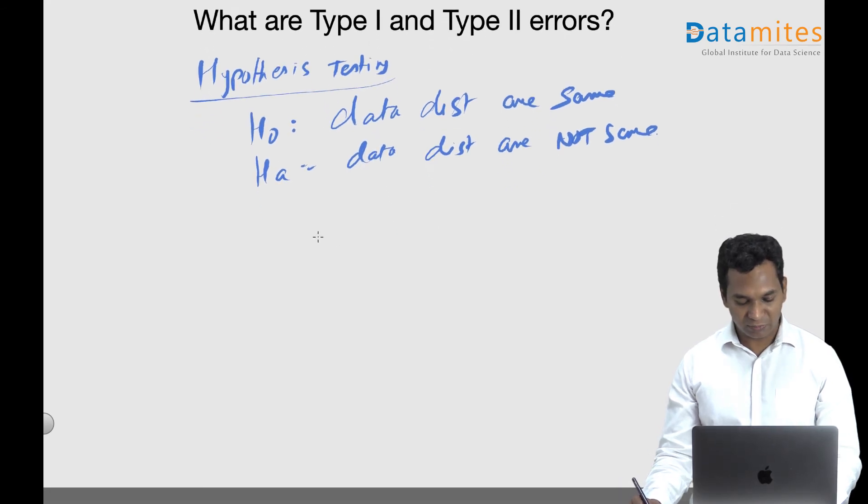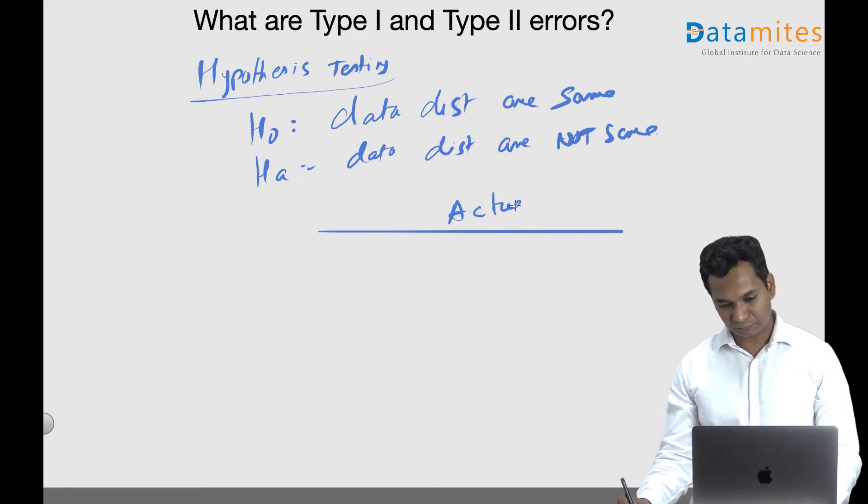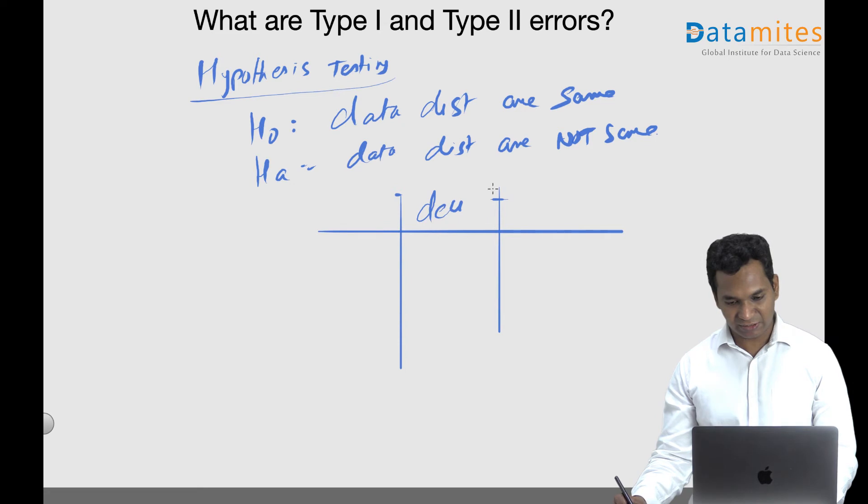So let's say this is what you decided from your hypothesis testing, and this is the truth, the ground truth, which is the actual.